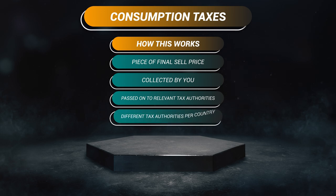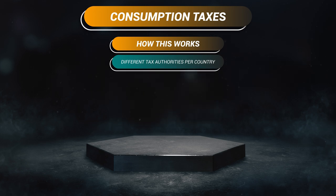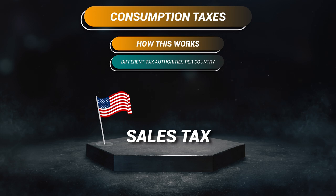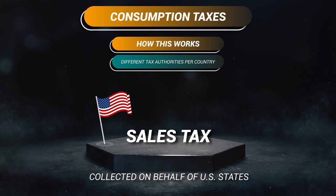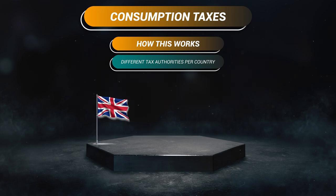Generally, how this works is that the consumption tax is collected by you, the seller, and then passed on to the relevant tax authority of that country. These consumption taxes differ between marketplaces and countries. For example, if you make sales in the US to US customers, you're likely going to be charging them sales tax on those purchases — collecting it on behalf of certain states and then remitting it to those states.